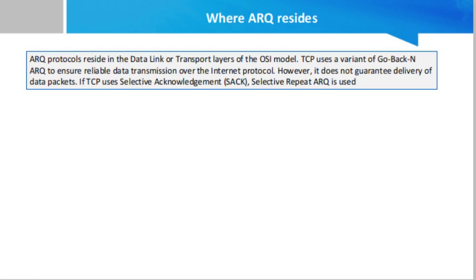ARQ protocols reside in the data link or transport layers of the OSI model. TCP uses a variant of Go-Back-N ARQ to ensure reliable data transmission over the internet protocol; however, it does not guarantee delivery of data packets. If TCP uses selective acknowledgement, Selective Repeat ARQ is used. When local area networks (LANs) have a noisy environment, Selective Repeat ARQ is employed with packet segmentation.